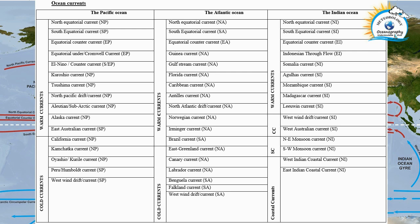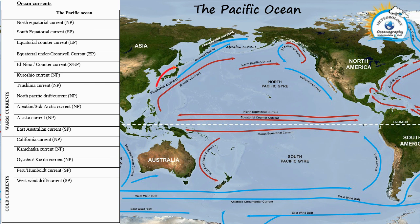Each ocean current is generally named after the region along which it travels. For example, we call a current the Brazil current because it travels along the coast of Brazil — that's how it gets that name. In the same way, every current gets its name from the particular region along whose coast it flows. This naming convention applies to all major ocean currents.